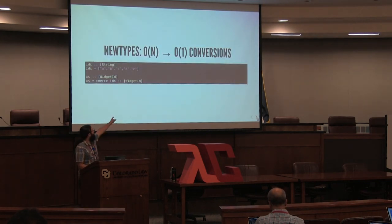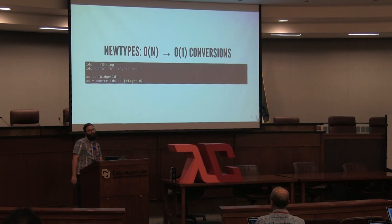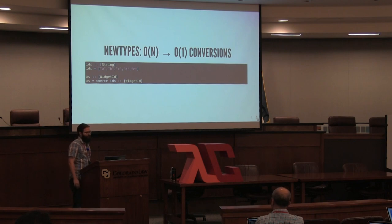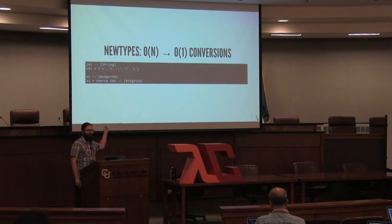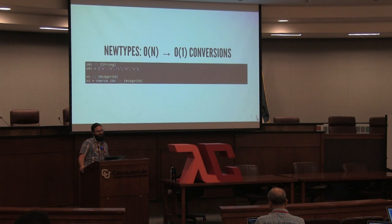A canonical example: `Int` isn't a great `Monoid` because it could use either sum or product. We disambiguate using new types — `Sum` and `Product` — and we don't pay a penalty for wrapping because it's compile-time only. Haskell also has the `coerce` function from the `Coercible` type class, which lets you safely cast a `List[String]` to a `List[WidgetId]` in constant time since they have the same runtime representation.